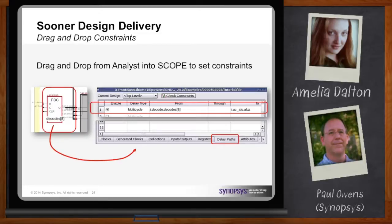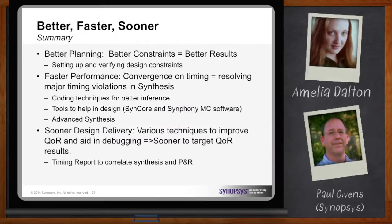Let me give you a recap. The keywords are better, faster, and sooner. Better planning and better constraints will get you better results — set up and verify your design constraints, run the compilation, generate those constraints and look at them. For faster performance, there are coding guidelines to follow for best performance, plus tools like Syncore and Symfony model compiler, as well as the new Advanced Synthesis feature. Finally, sooner design delivery allows you to correlate your timing results for place and route with your synthesis timing results.